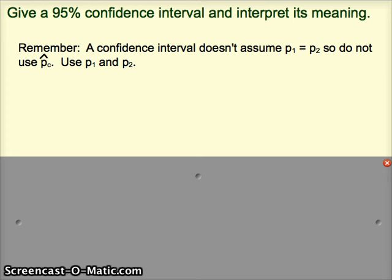So the confidence interval doesn't assume these are equal to each other, so we're not going to use p-hat combined. Instead we're going to use p-hat 1 and p-hat 2 in the standard error calculation. So we're not going through a full panic step here, let's just set it up.